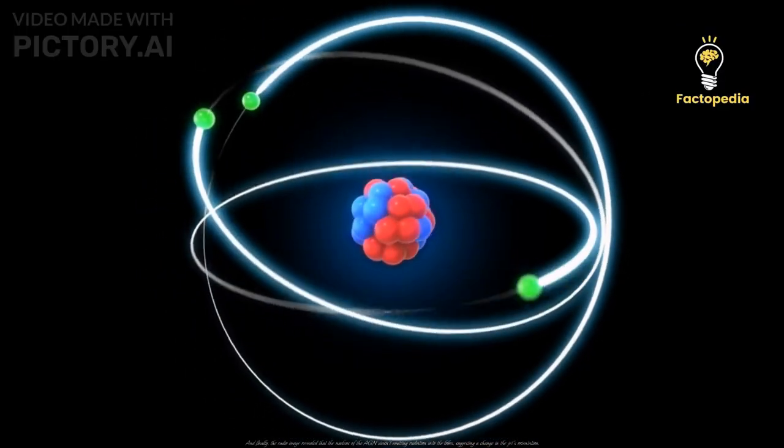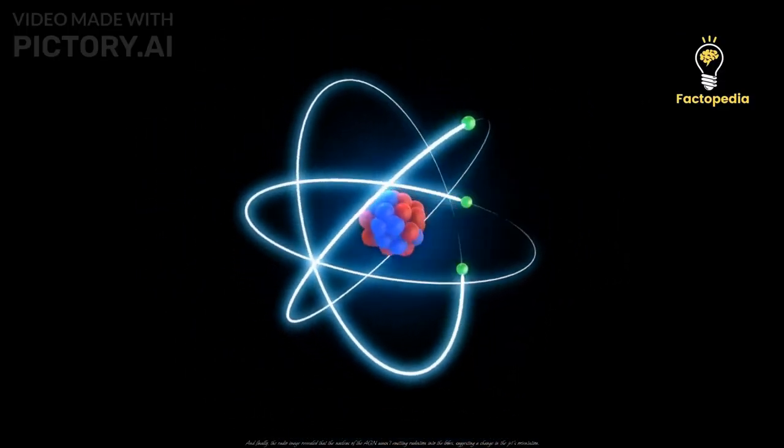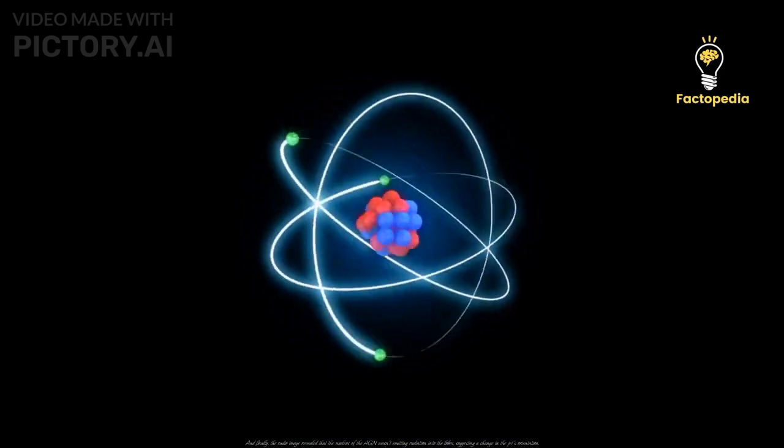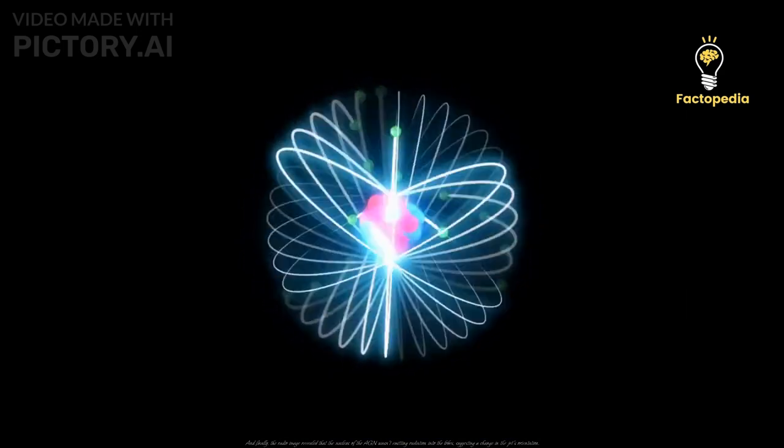And finally, the radio image revealed that the nucleus of the AGN wasn't emitting radiation into the lobes, suggesting a change in the jet's orientation.